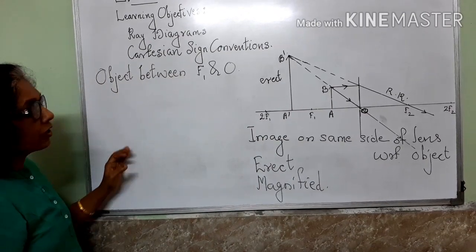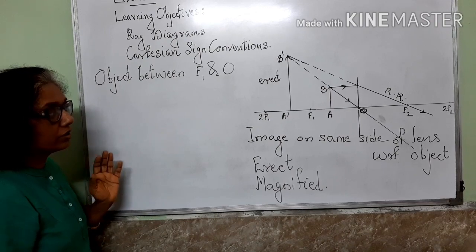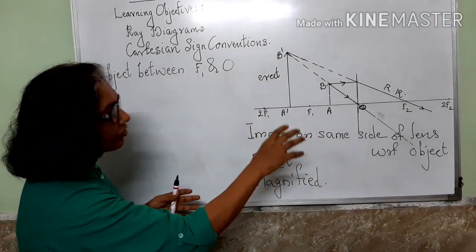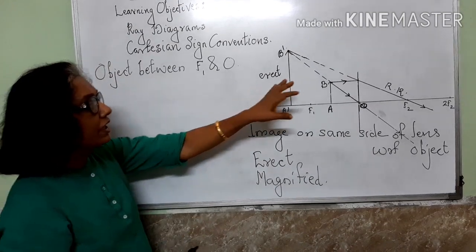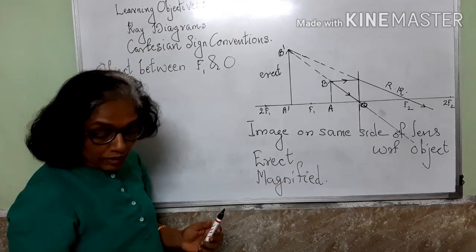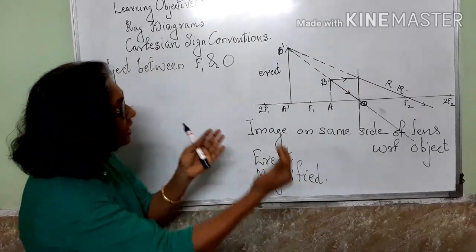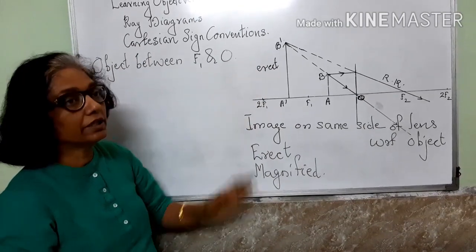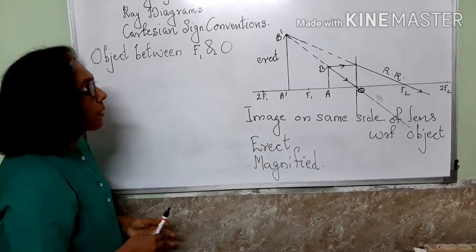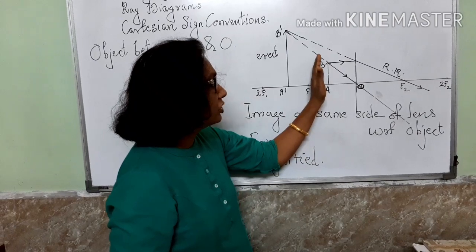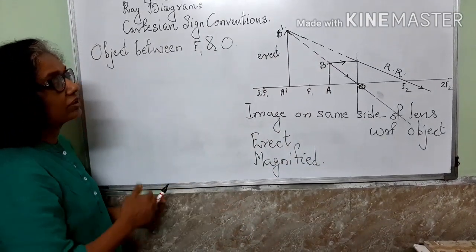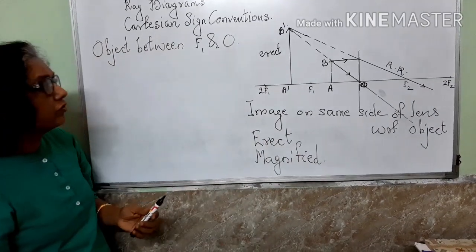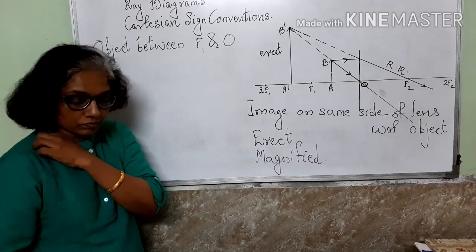For the exam, you may also get a question to distinguish between a real image and a virtual image. In case of a real image, the refracted rays actually meet. In case of a virtual image, the refracted rays when extended backward meet. A real image can be cast on a screen; a virtual image cannot be taken on a screen. A real image is inverted with respect to the object; a virtual image is erect with respect to the object. You need to know these three differences for the exam.